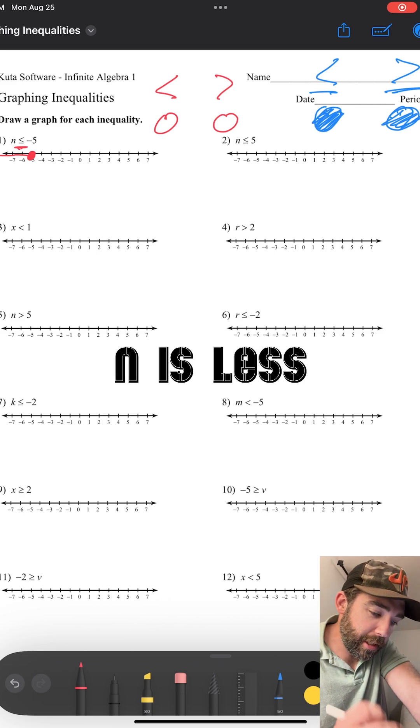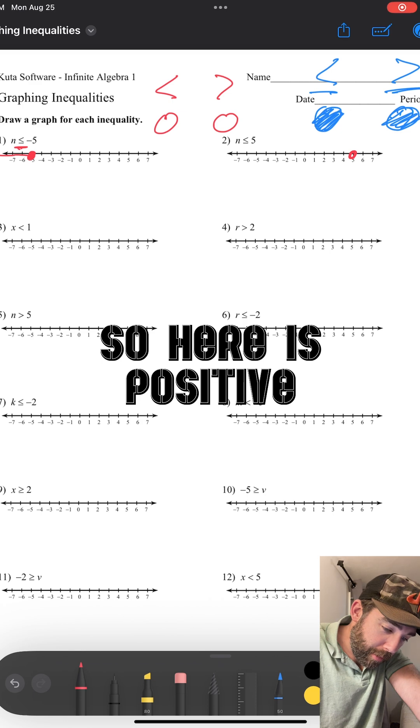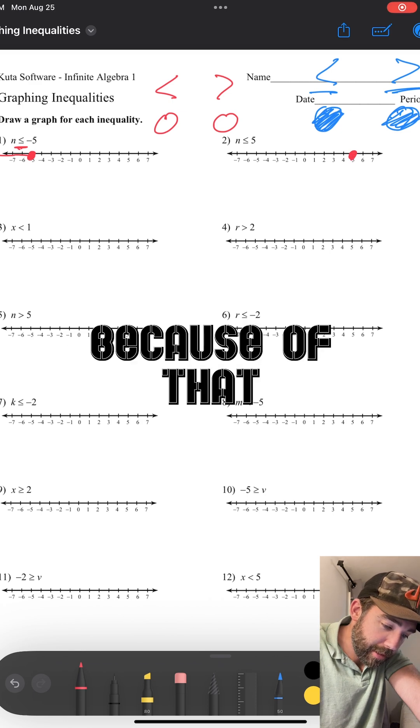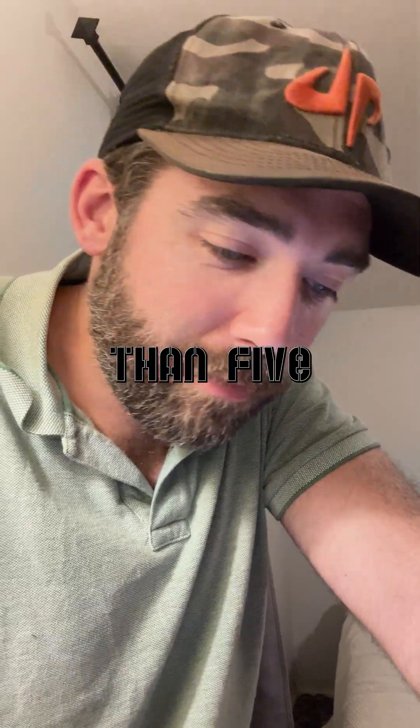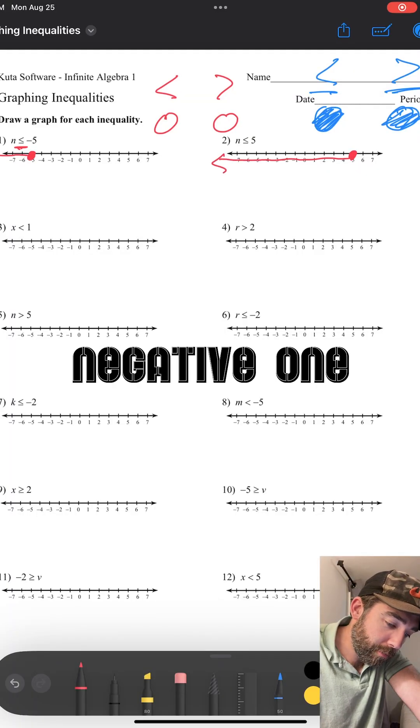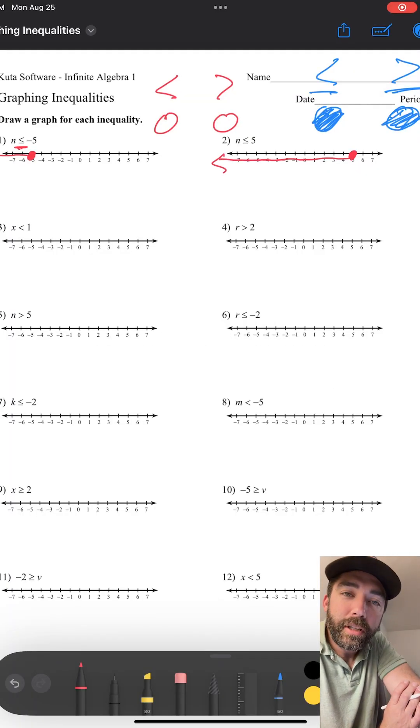Let's do another one. N is less than or equal to positive five. So here's positive five. It's a closed circle because of that equal to, and N is still less than. What is less than five? Well, four, three, two, one, zero, negative one, all the way down. That is how you graph inequalities.